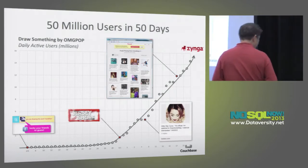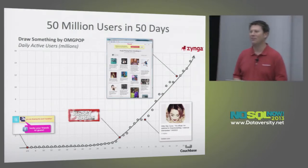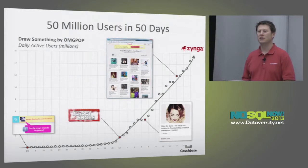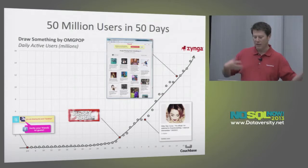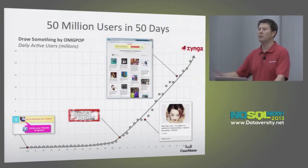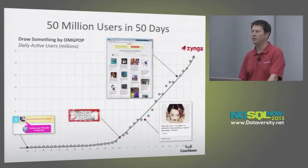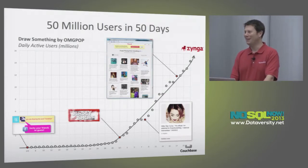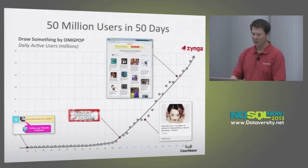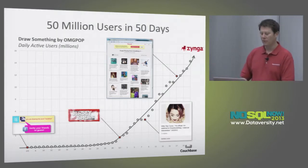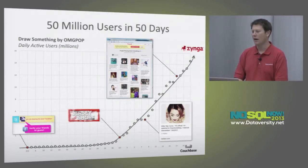While we'd all love to have that problem, the good news was that because of some of the technologies they'd picked — both from a polyglot persistence perspective as well as from an application development perspective — they were able to scale that growth. It doesn't mean it was trivial, but they were able to do it without taking the game offline, without app downtime. They were able to grow very quickly, and we're pretty proud of that particular case where things worked out quite well.